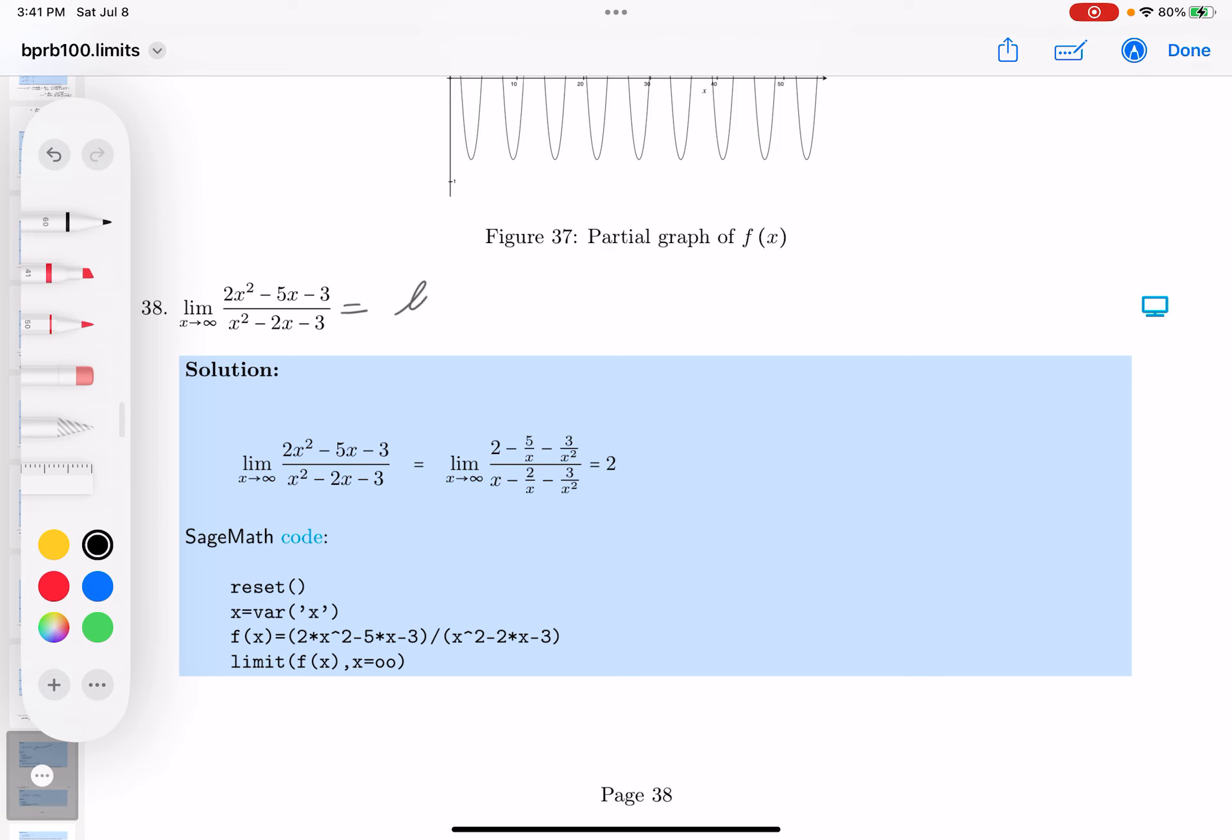And your teacher, what they told you to do as you're doing these limits at infinities, like it goes plus infinity, minus infinity, is divide through by the highest degree variable, which is x squared.